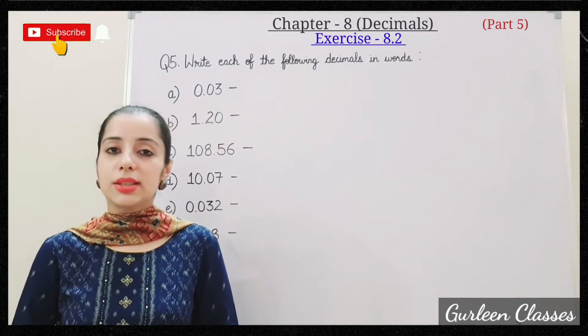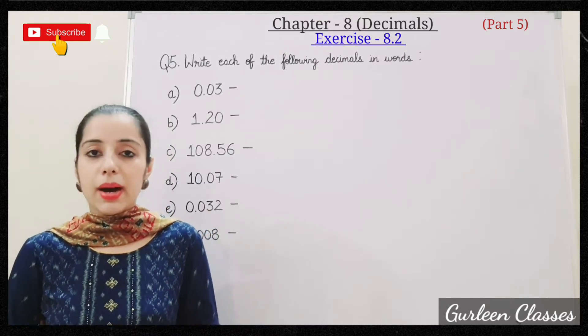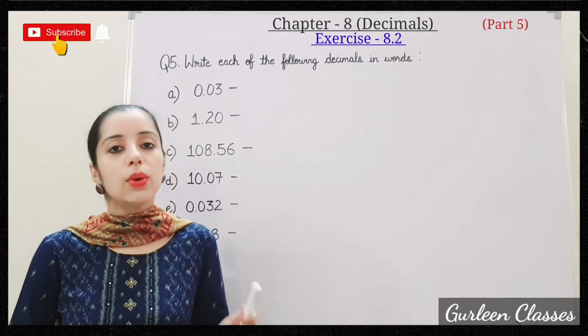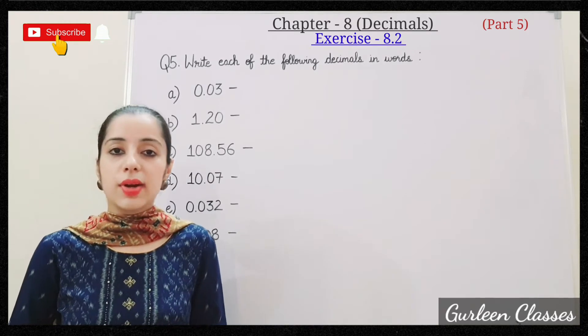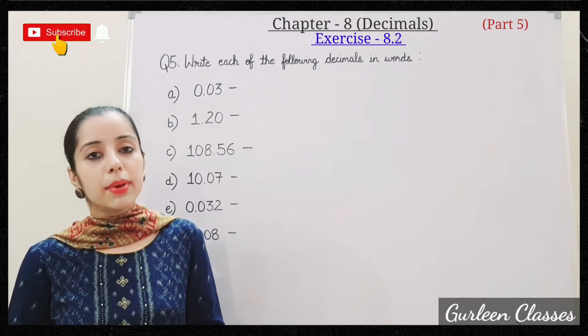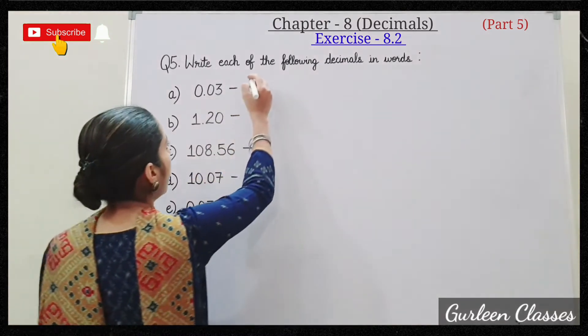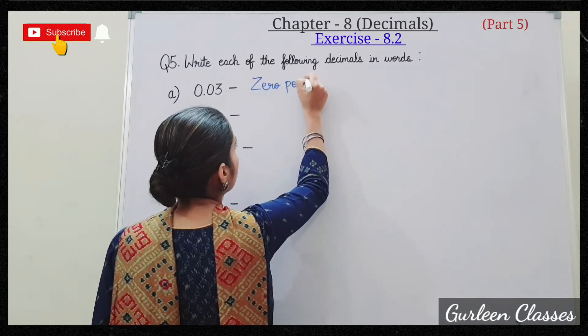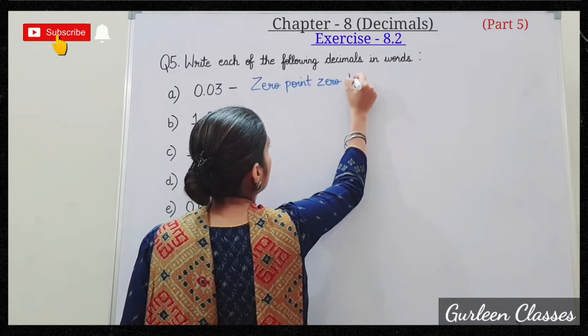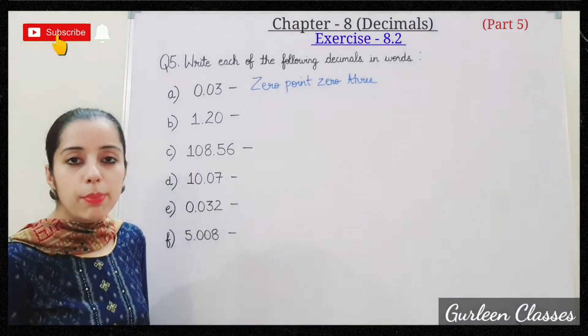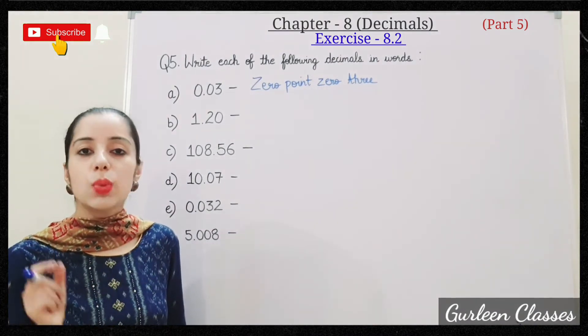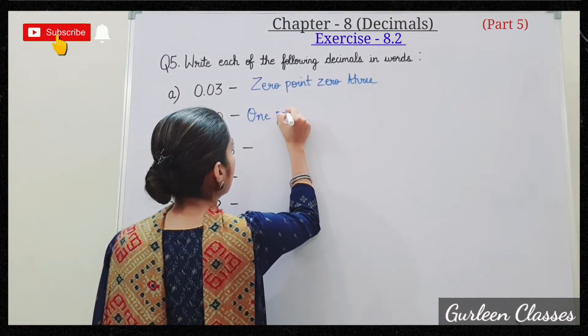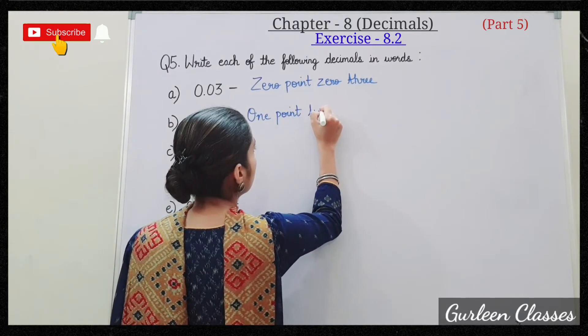Question number 5: write each of the following decimals in words. A: 0.03. The way I said, same way we have to write. 0.03. Keep in mind, the number is written in the decimal part, we read digit wise, we break the number, then we write. So let us write: zero point zero three. B: 1.20. You will not read as 20, it will be two zero. So write here: one point two zero.